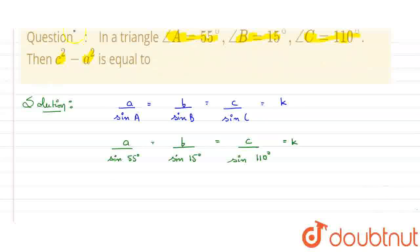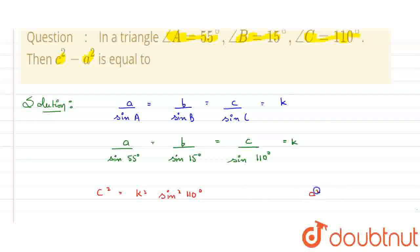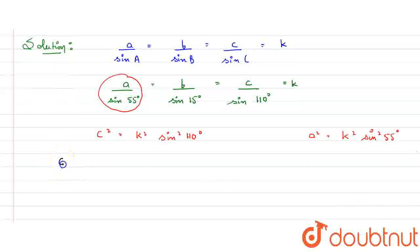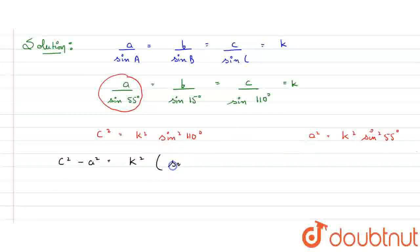We need to find the value of C squared minus A squared. The value of c squared will be K squared times sine squared 110 degrees. And from here, the value of a squared will be K squared times sine squared 55 degrees. So C squared minus A squared equals K squared times the quantity sine squared 110 degrees minus sine squared 55 degrees.